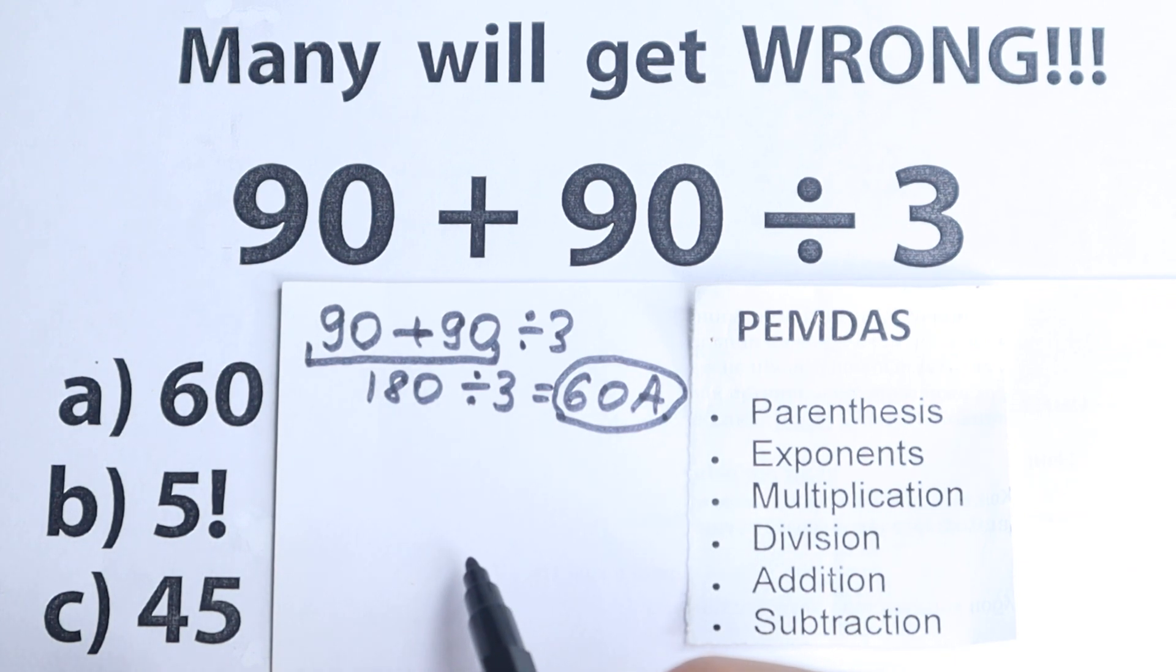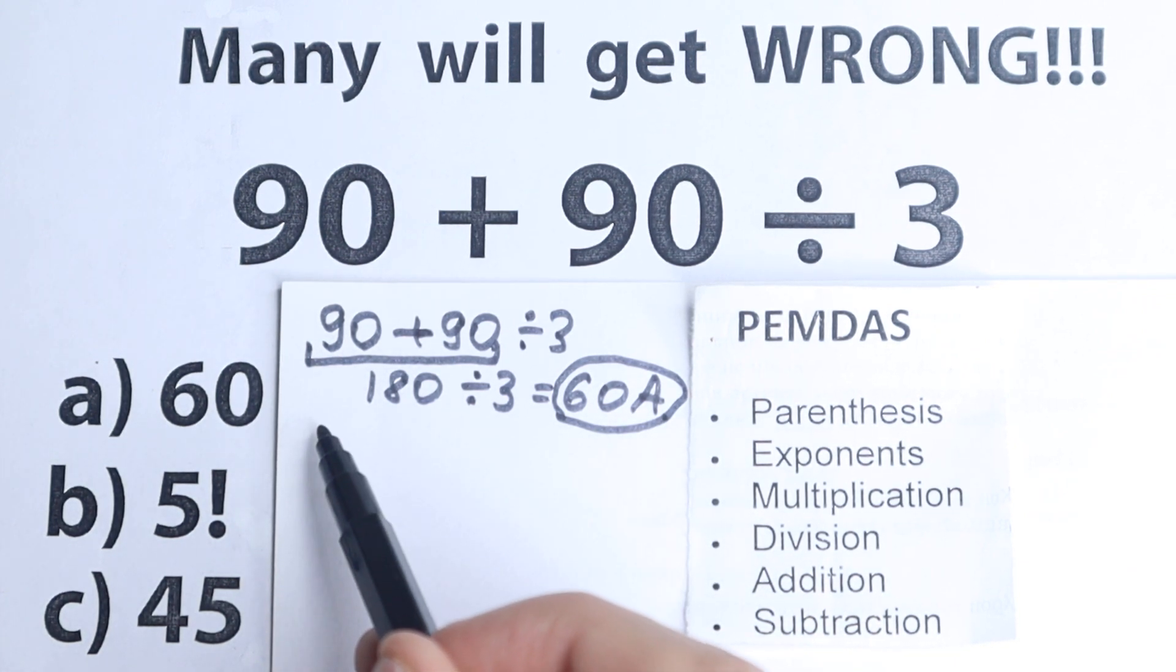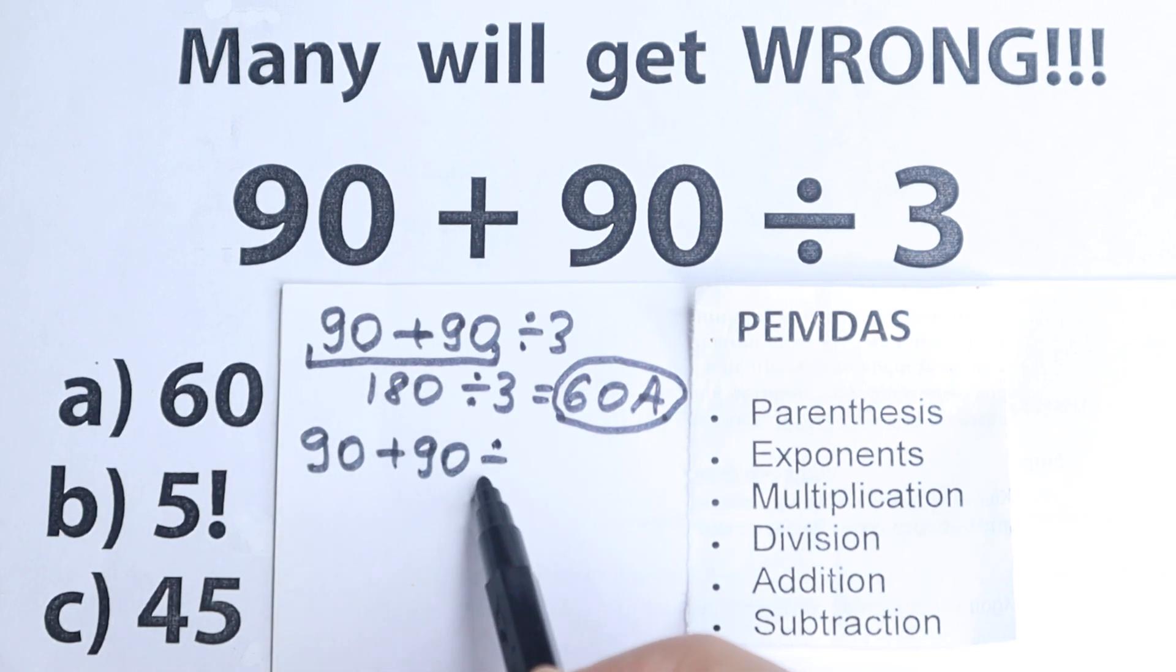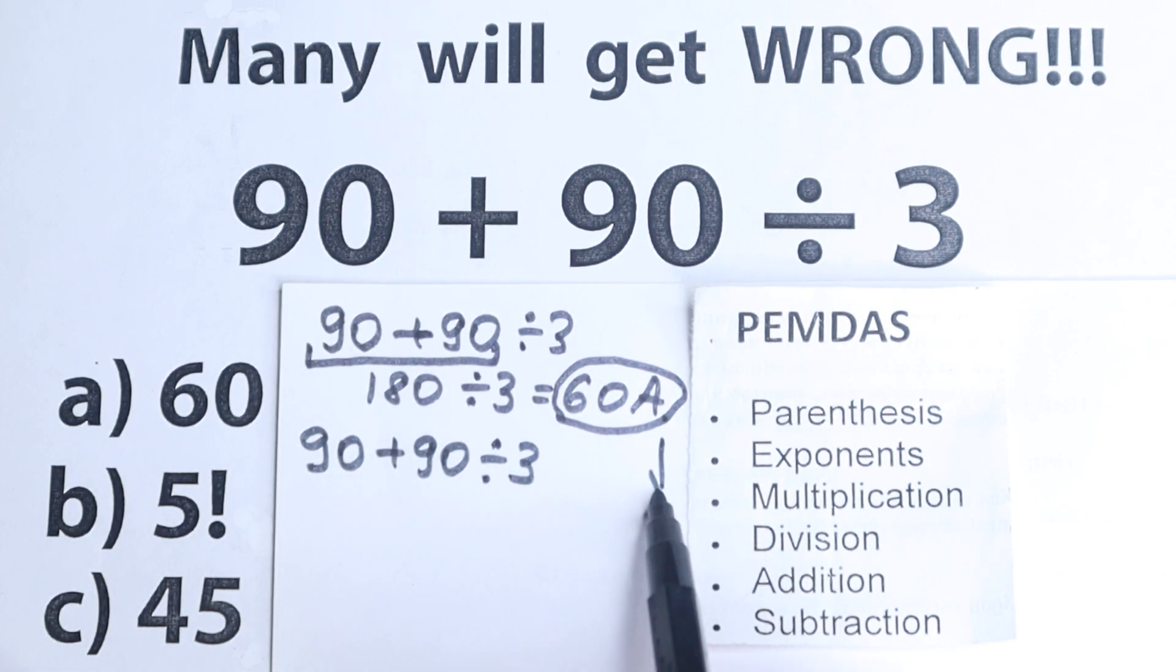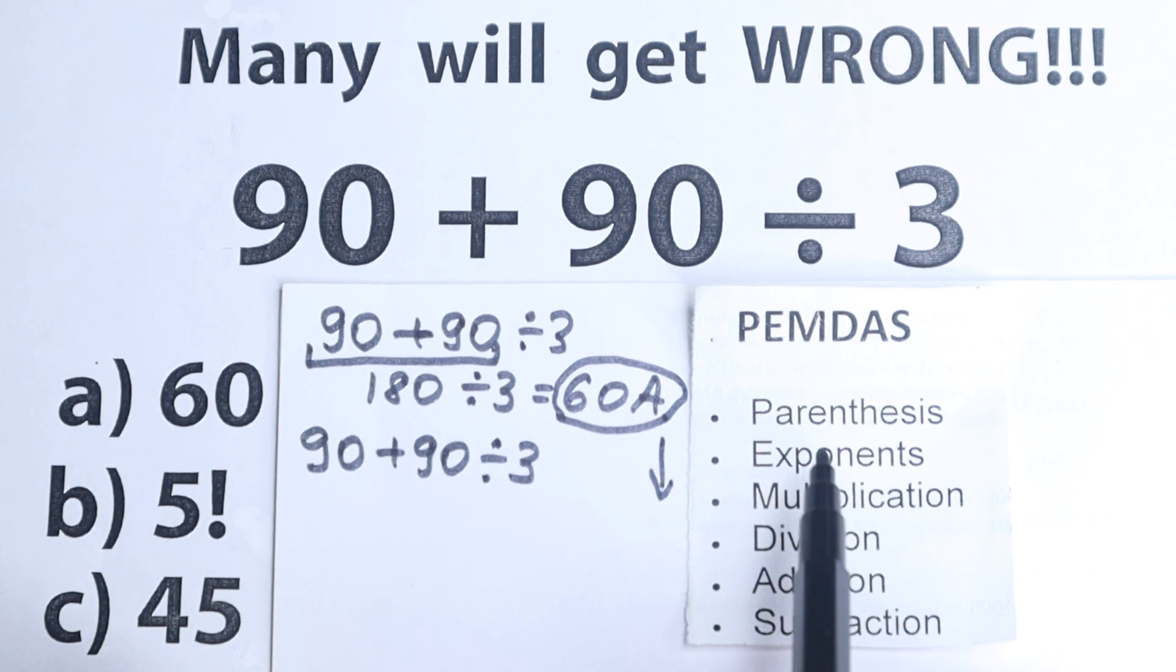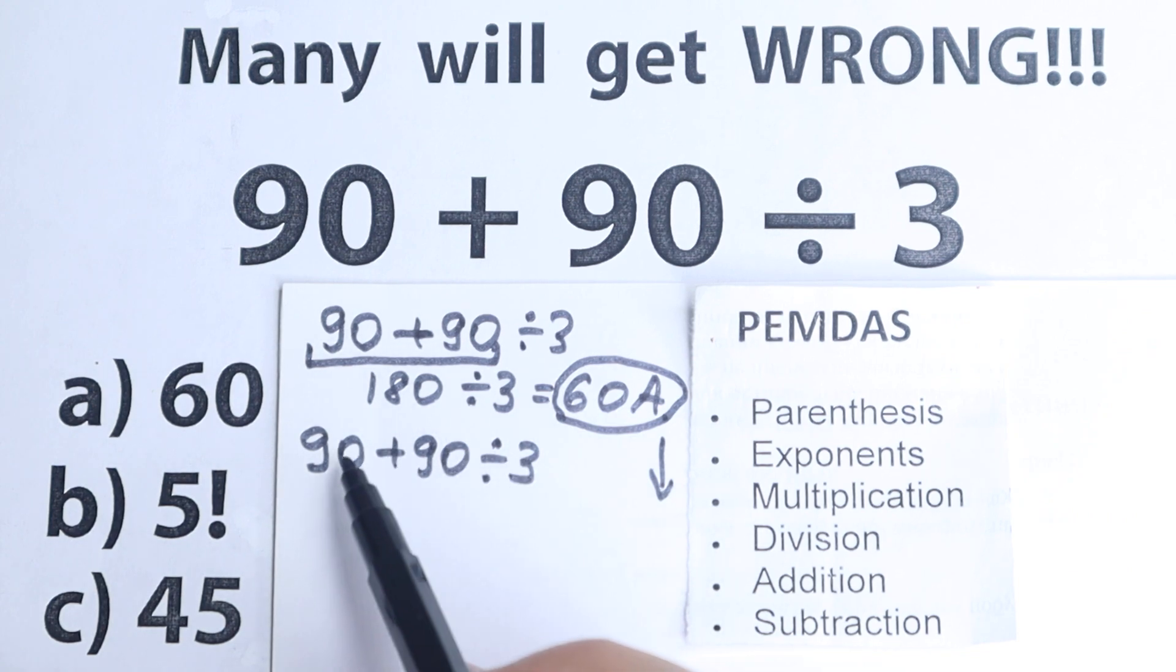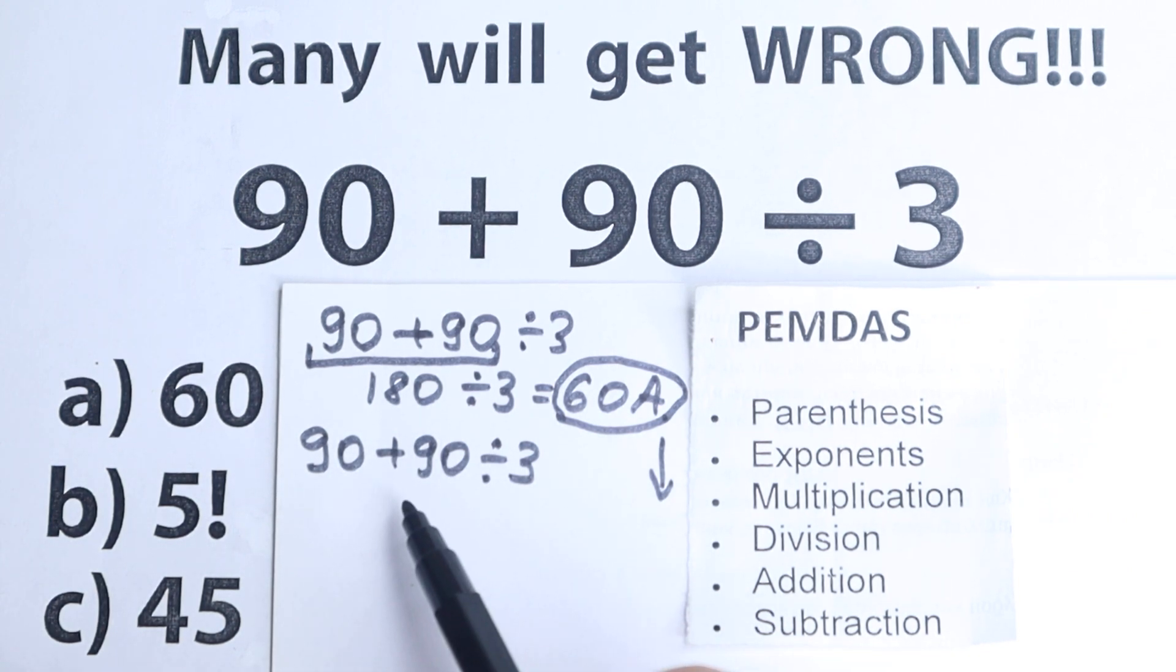We can easily see that if we have our question right here, 90 plus 90 divided by 3, this PEMDAS works from the top to the bottom. Let's look at this PEMDAS order of operation. So the first step is parentheses. Are there any parentheses right here? No, I don't see any, we don't have any parentheses, so we just go to the next step.